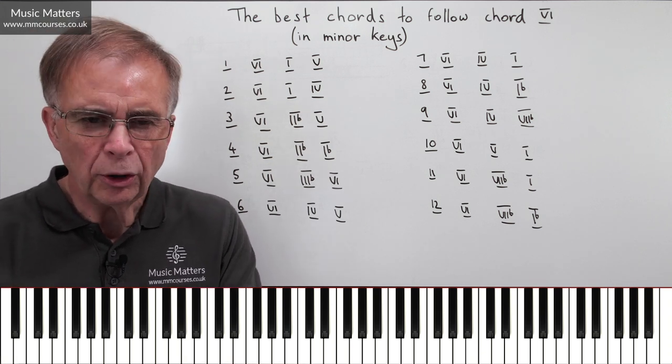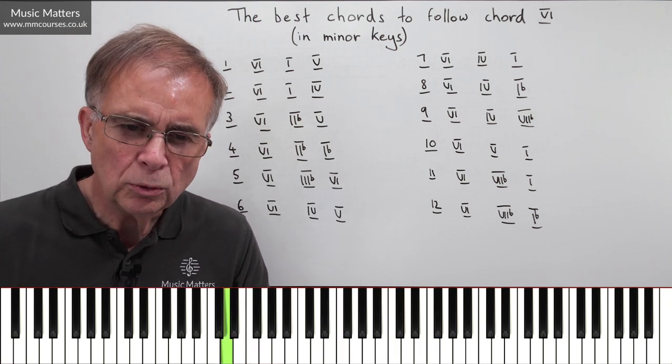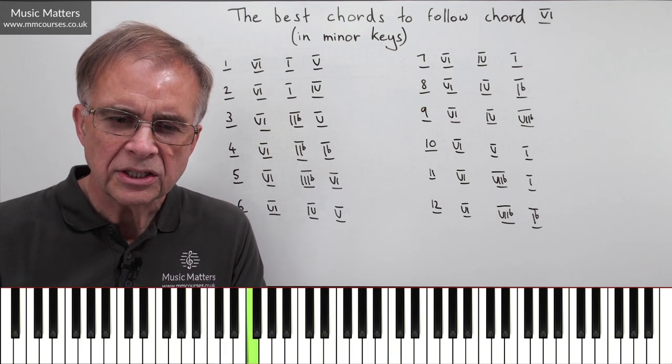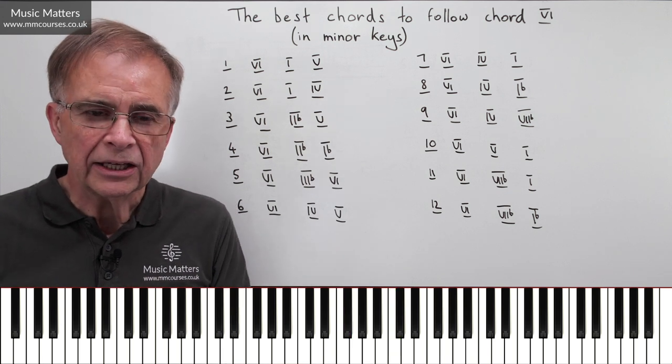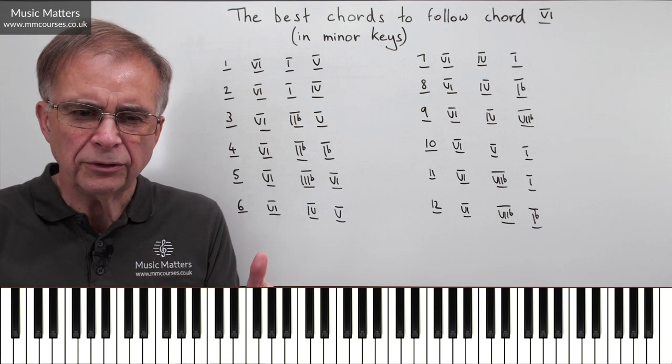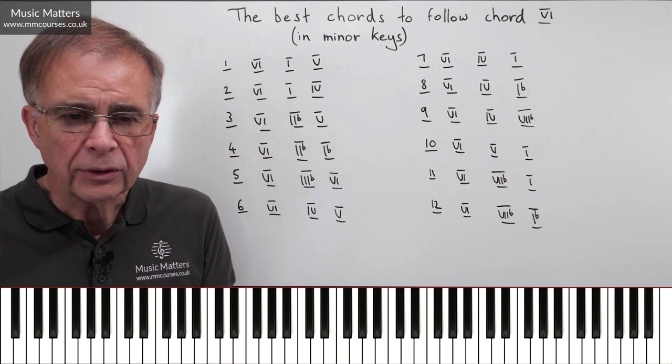Now it doesn't want to stop there obviously, but VI to IV to VIIb to I, or VI to IV to VIIb to Ib, means that that can be quite an effective thing to do. So if you're going to go from VI to IV, well, where do you go next I suppose is what this is flagging up.